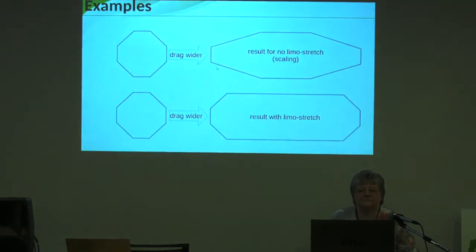Our first example: what is a limo stretch at all. When you have an octagon and drag it wider and it is simply scaled, then you see that the cuts here change their slope. When you have an octagon where a limo stretch is enabled, then it looks as if it is here cut and you have dragged the right part.